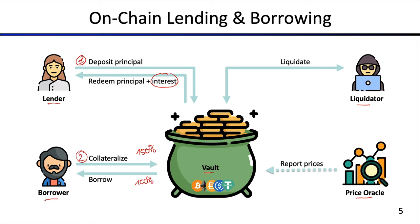Once the borrower has collateralized something, they can then borrow the assets. If they collateralize something and then borrow, the sum of their total assets is now bigger than before. The danger, however, is that they might get liquidated. So let's discuss how the liquidation process works — this is the key risk in lending and borrowing. In essence, if the value of the collateral drops below a certain value — for instance, less than 150% — then price oracles update the on-chain reported prices of the collateral assets.